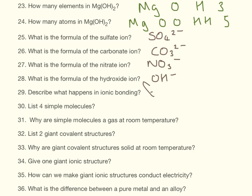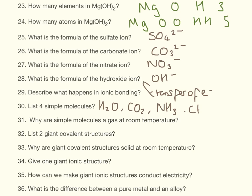Ionic bonding is the transfer of electrons. For simple molecules, the ones you need to know are water, carbon dioxide, ammonia, and methane. It's handy to be familiar with their formulas. They're simple molecules because they have weak intermolecular bonds.